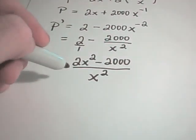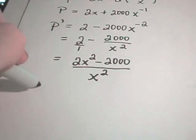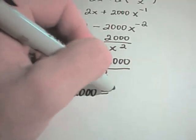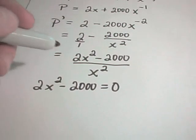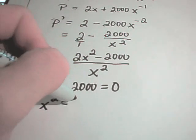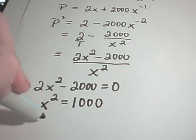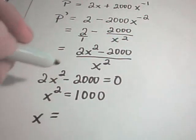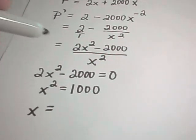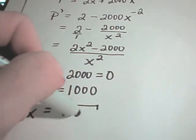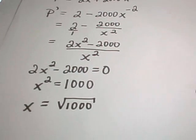The critical numbers for this equation: I'll set 2X squared minus 2000 equal to 0 and I'll solve that. If you add 2000 and divide by 2, you'll get that X squared equals 1000, so that means that X here is going to equal the square root of 1000.